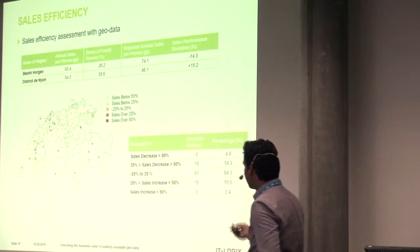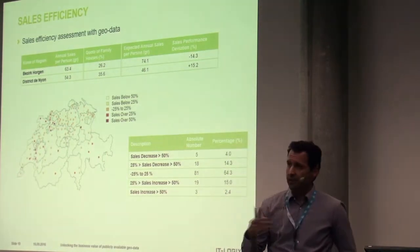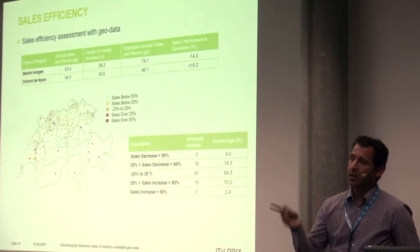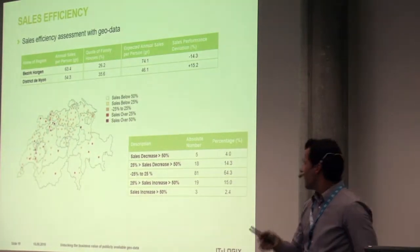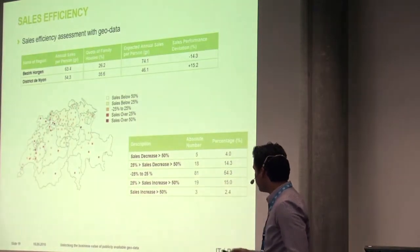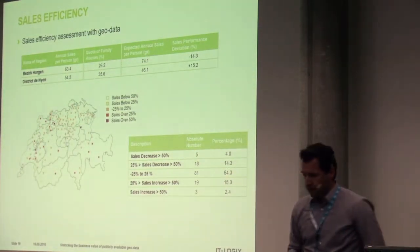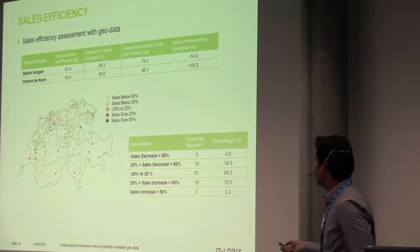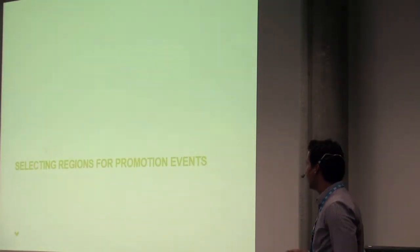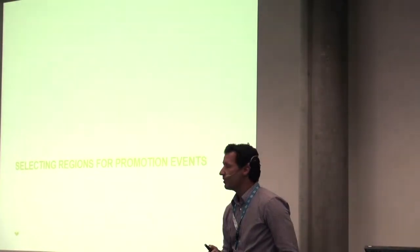We did this analysis across all regions for our customer and found regions that are over-performing and under-performing in terms of sales. This helps to do a kind of knowledge transfer between these regions. That's the first part — product understanding and sales efficiency — and now I'll move to the second part, which is about selecting regions for promotion events.